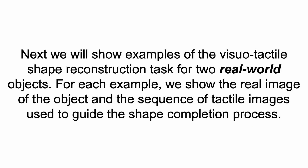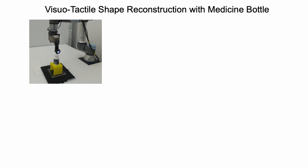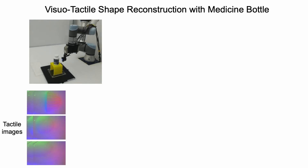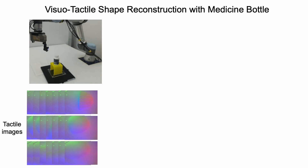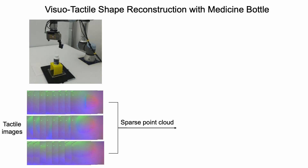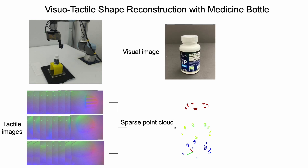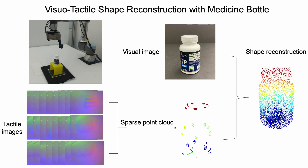Next, we show examples of the visual-tactile shape reconstruction task for two real-world objects. For each example, we show the real image of the object and the sequence of tactile images used to guide the shape completion process. We collect real touch readings around the object, then sample a sparse point cloud from the collected tactile images. Combining visual cues from the image and the sparse point cloud from the tactile readings, we use a point completion network to reconstruct the dense point cloud. Note that we learn with simulation data only and directly transfer learned models to real-world objects. The reconstructed point cloud accurately captures the shapes of the object.